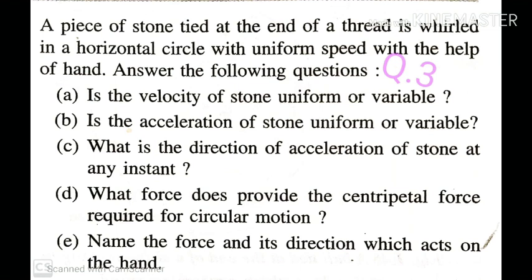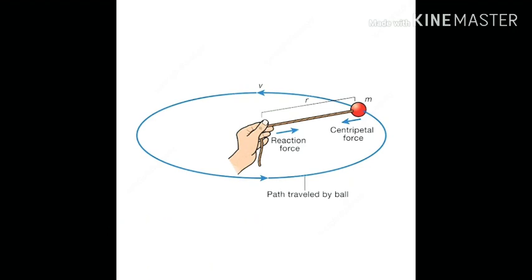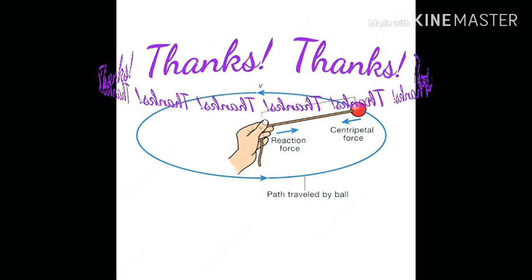Question three: A piece of stone tied at the end of a thread is whirled in a horizontal circle with uniform speed. Is the velocity of the stone uniform or variable? The velocity is always variable. Is the acceleration uniform or variable? In uniform circular motion, acceleration is also variable — the only quantity that remains constant is speed. What is the direction of acceleration? Acceleration always acts towards the centre of the circular path. What force provides the centripetal force? The tension in the string provides the necessary centripetal force. The force acting on the hand is the reaction of tension, directed away from the centre of the circular path.